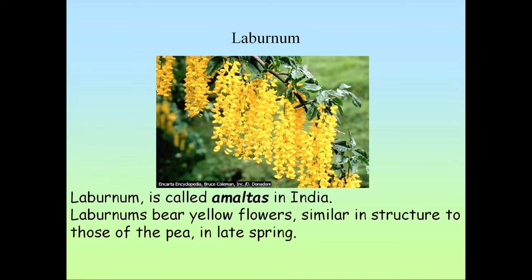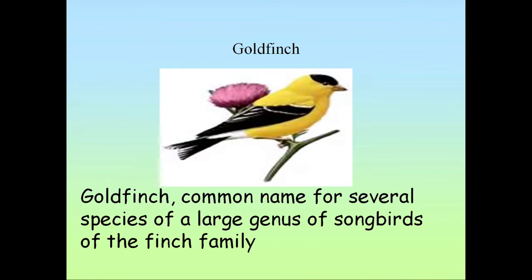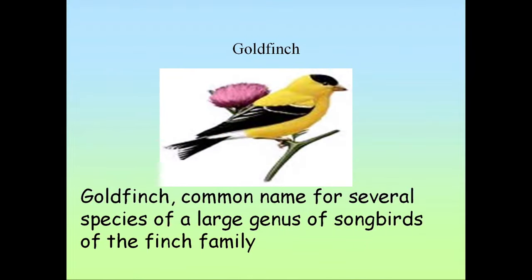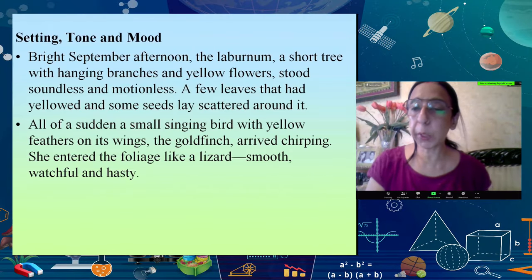The laburnum is a tree — it's called Amaltas in India — with yellowing, hanging flowers that become yellow in late spring. The goldfinch that we're going to talk about is a species found in England. Please notice the bird, because we are going to talk of the barred face of its identity that the poet mentions. Observe the bird carefully before we begin what the poem is about.